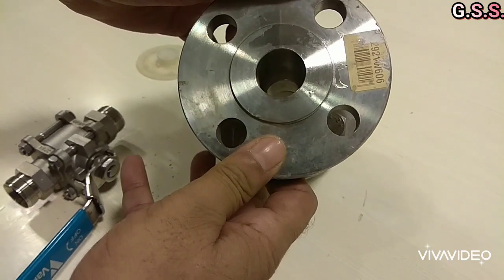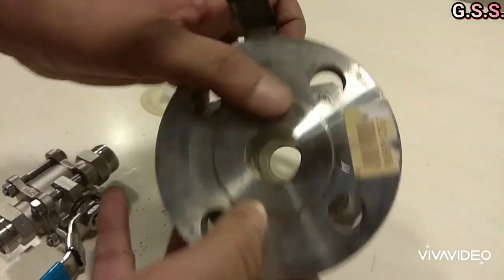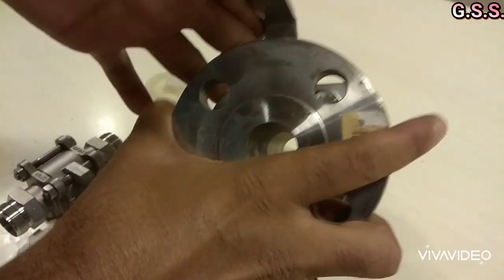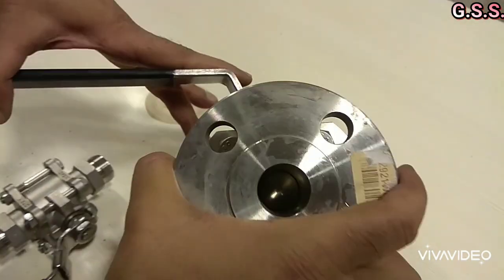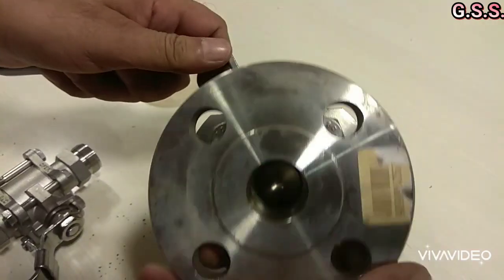Now this valve is on. If I rotate the lever by 90 degrees like this, the valve is closing. Now the valve is closed.